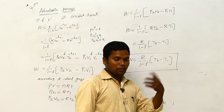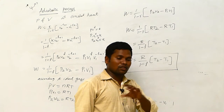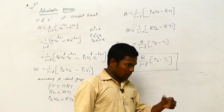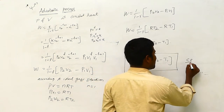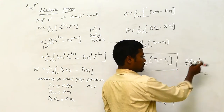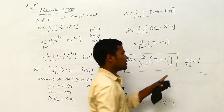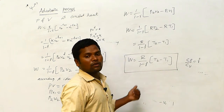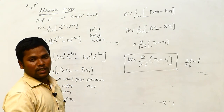Sometimes you may get a numerical problem where they give different temperatures. R is a known constant, and gamma will also be given — sometimes as Cp and Cv values. The relation is Cp by Cv equals gamma. From that you can substitute and get the work done in the adiabatic process. Like that, you can derive this equation.